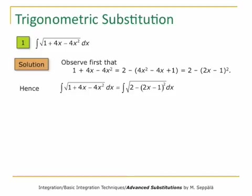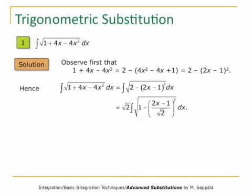This is already a simplification. We still have a problem with the term 2 under the square root. So we write 2 − 2(x−1)² as 2 times (1 − ((2(x−1))/√2)²). When we do that, we can take this 2 as a common factor outside of integration, and we get √2 times the integral of √(1 − ((2(x−1))/√2)²) dx.